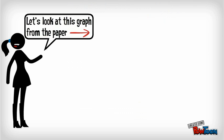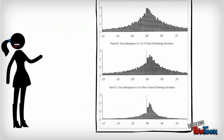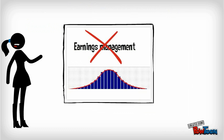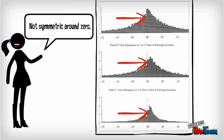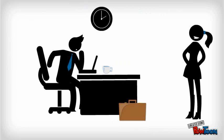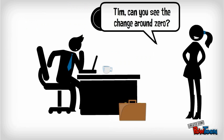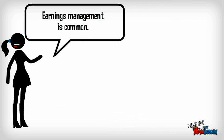Let's look at this graph from the paper. In a situation of no earnings management, the distribution would be symmetric. But as you can see this is not the case around zero, indicating that firms manage their earnings to avoid decreases. Tim, can you see the change around zero? The results also indicate that earnings management to avoid earnings decreases is common.